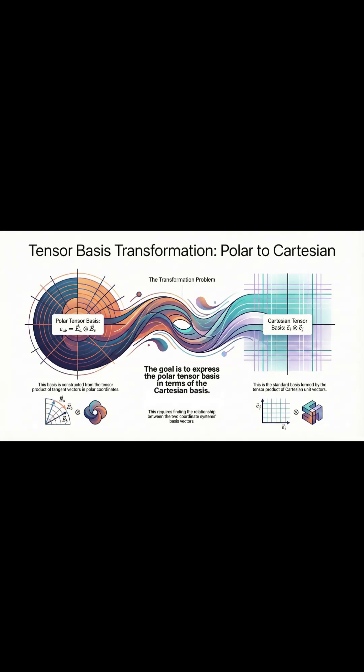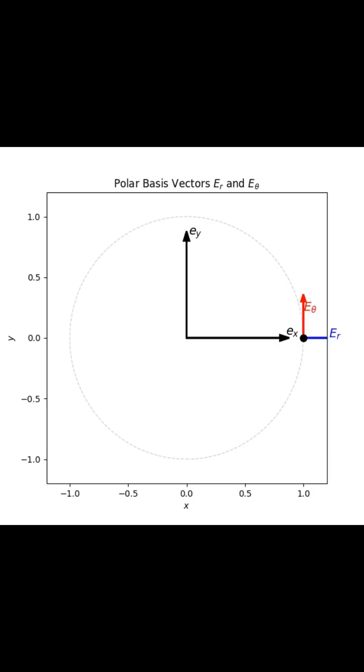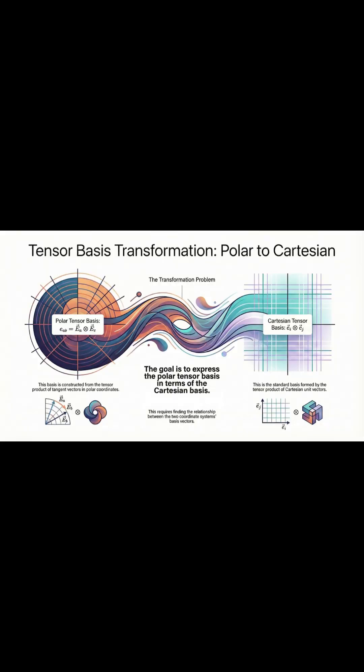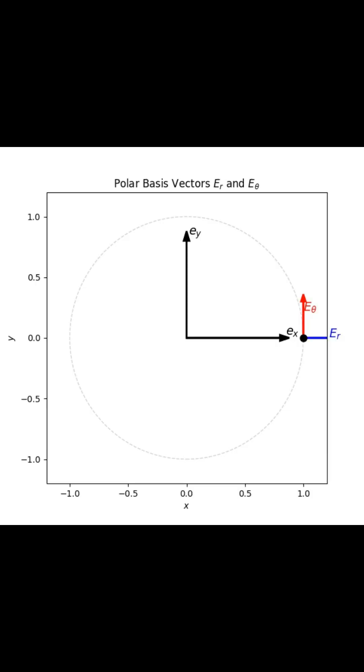First, it all starts with the physical rotation. Think about your standard x-y grid. Those directions are locked in, right? But with polar coordinates, the basis vectors actually point in different directions as you swing around a circle. And that physical change, that movement, is exactly why we need to do all this transformation math in the first place.